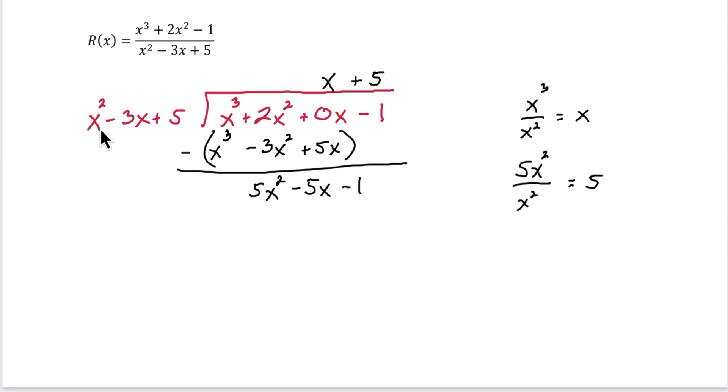But let's continue to distribute. 5 times x squared is 5x squared. 5 times negative 3x is negative 15x. And then 5 times 5 is 25. We will then subtract. First two terms cancel. Negative 5 minus negative 15 is negative 5 plus 15, or 10x. Then negative 1 minus 25 is negative 26.